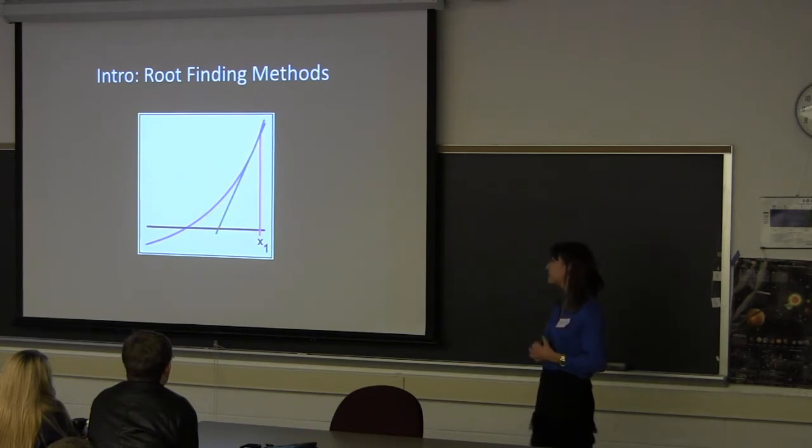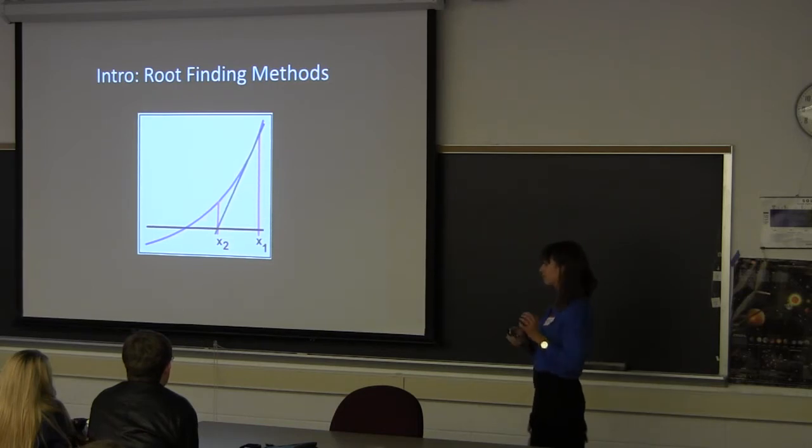Consider the tangent line at that point. That's also going to run into the x-axis, and we can call that point x2. Once again, if you draw a line straight up, you're going to intercept f of x at the point x2 comma f of x2. As you can see, if you continue this process, you go closer and closer to a root.